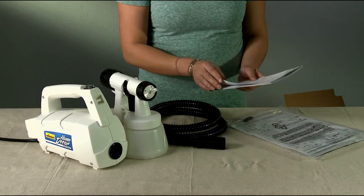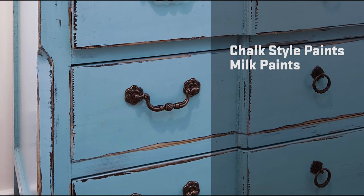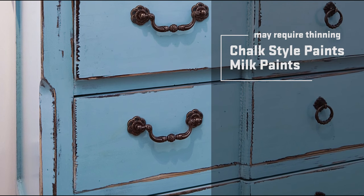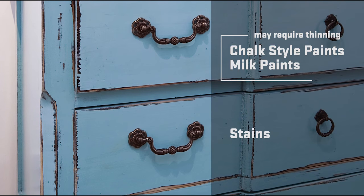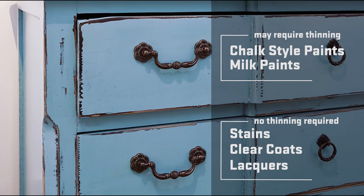Chalk-type paints, milk paints, and other thicker decorative paints may need to be thinned to achieve consistent spraying and a smooth finish. Transparent and semi-transparent stains, clear top coats, and lacquers don't require thinning.